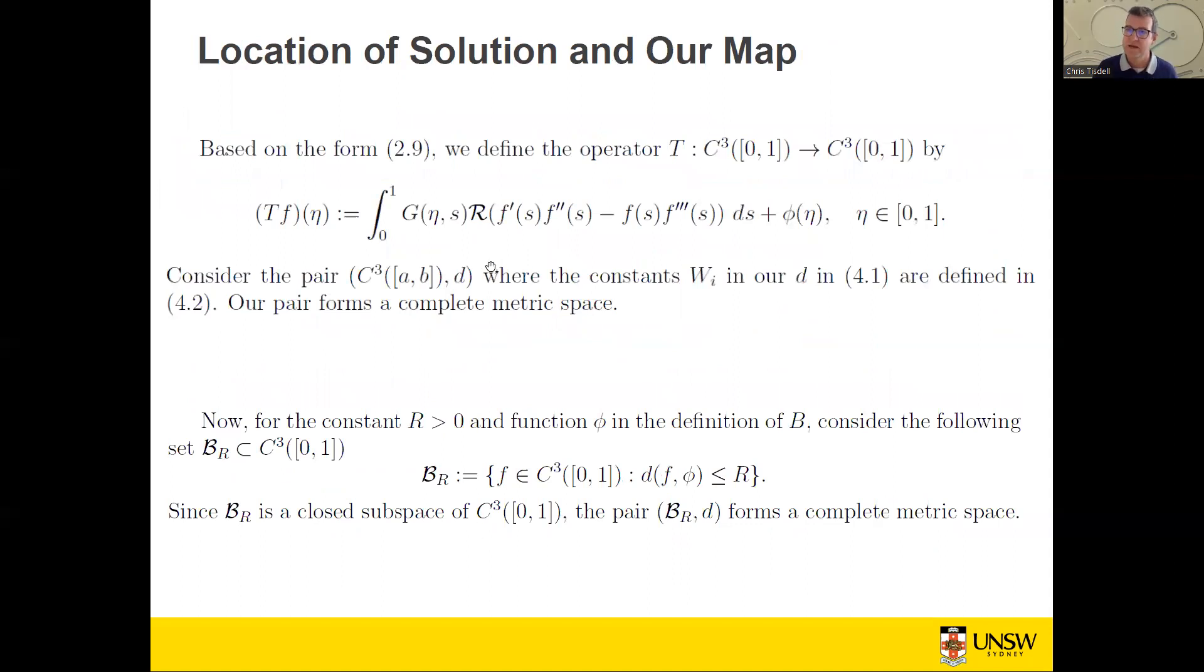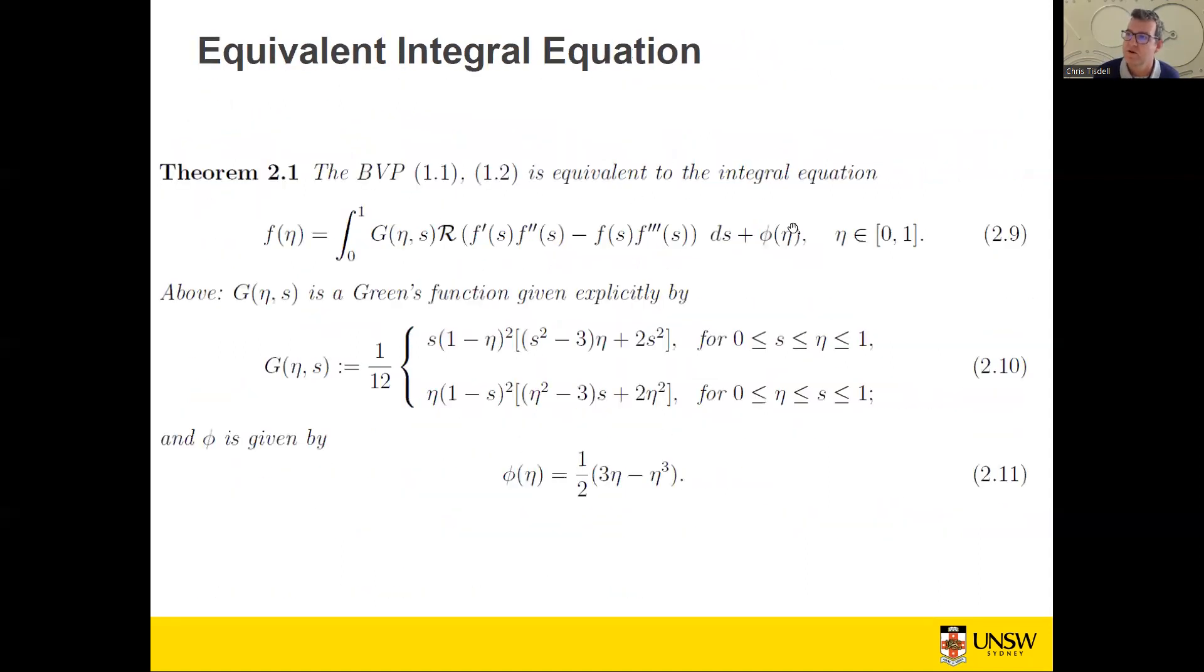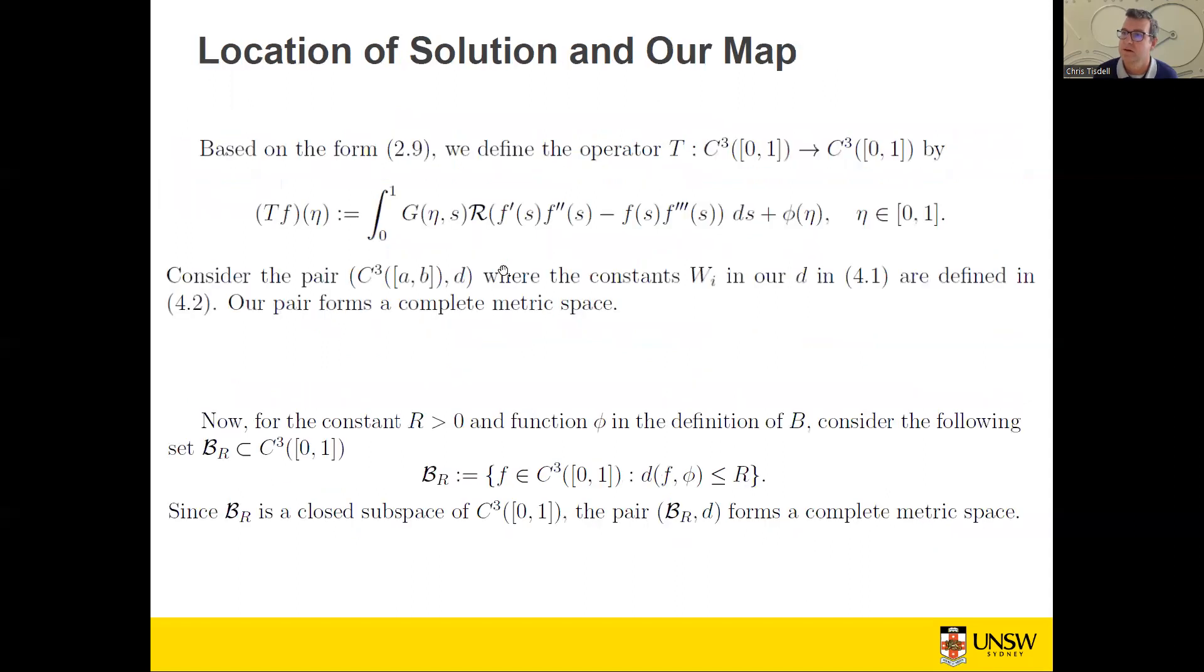In order to define our operator, we take our Q from this right-hand side. We're saying we want to show that equals that. Let's make this right-hand side T of F. And then if I can apply Banach's fixed point theorem, I know that T of F equals F. So it's the same as showing this equals this.